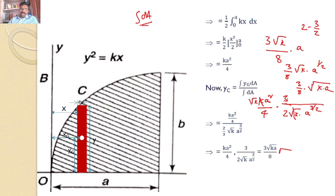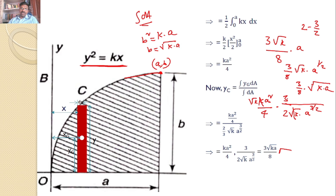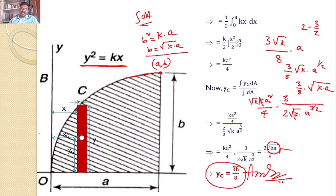Note that the boundary point (a, b) lies on the parabola y² = kx, so b² = k·a, meaning b = √(ka). Therefore √k·a^(1/2) = √(ka) = b. Substituting, y_c = 3b/8. This is the y-coordinate of the centroid for the given area, completing the solution.